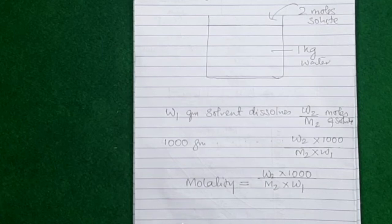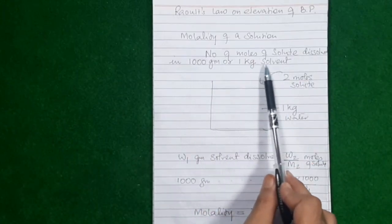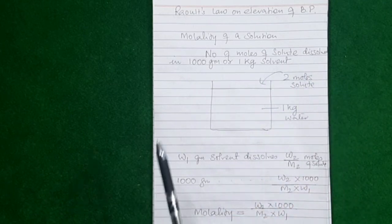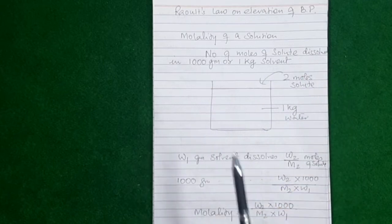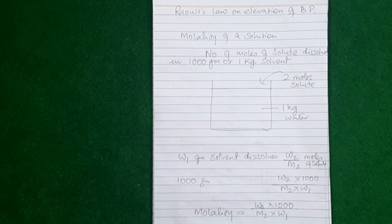Molarity is the number of moles of solute dissolved in one liter of solution — not one liter of solvent, but one liter of solution. In molarity, one liter of solution means volume is involved. You know that volumes of liquid keep changing with changes in temperature, because liquid expands on heating and contracts on cooling.